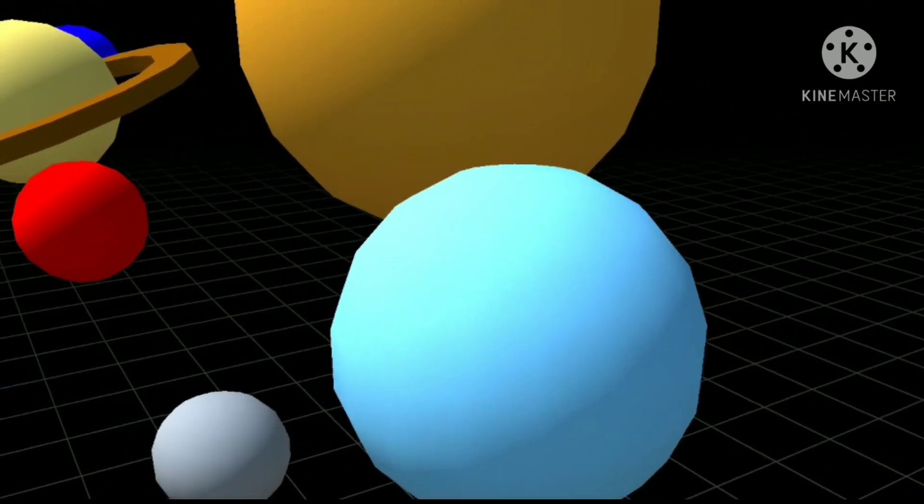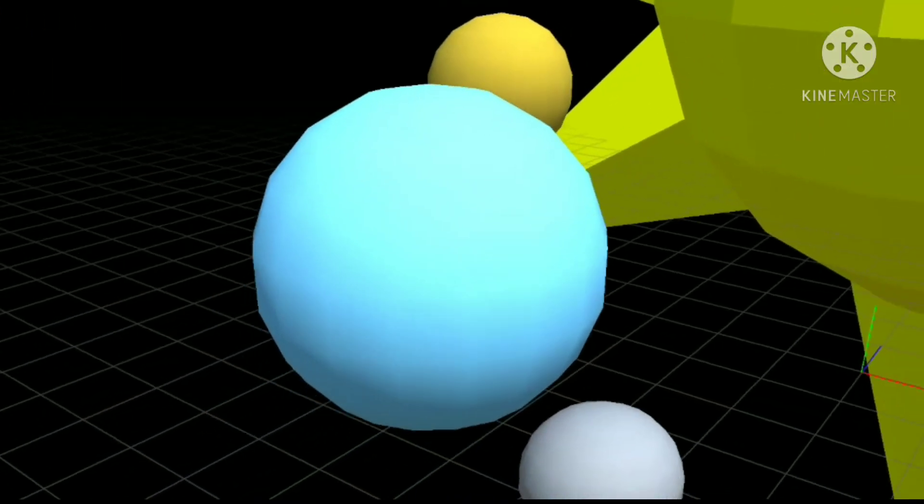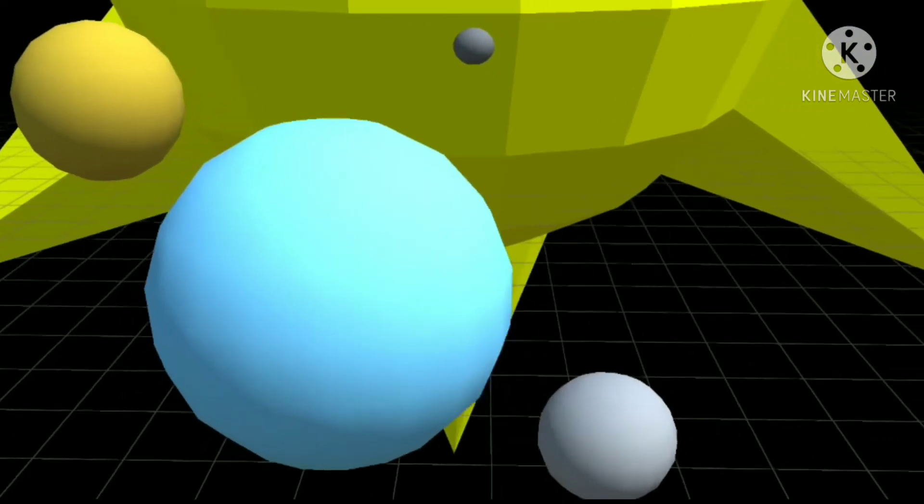Next up is Earth, AKA the life planet. It has a single moon. All life is located on this planet.